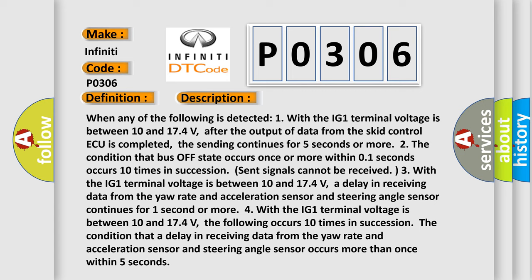Three, the condition that a delay in receiving data from the yaw rate and acceleration sensor and steering angle sensor continues for 1 second or more. Four, with the IG1 terminal voltage between 10 and 17.4 volts, the following occurs 10 times in succession: the condition that a delay in receiving data from the yaw rate and acceleration sensor and steering angle sensor occurs more than once within 5 seconds.